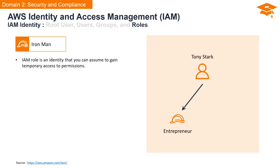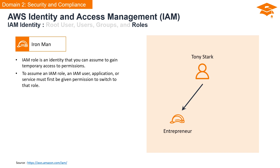An IAM role is an identity designed for individuals, applications, or services to temporarily gain access to specific permissions within AWS. These roles serve as a bridge for users, applications, or services to access resources they might not have direct permissions for. Using Iron Man as an example, to assume the role of Iron Man, Tony Stark must have credentials to switch to that role. Similarly, to assume an IAM role in AWS, an IAM user, application, or service must first be granted permission to switch to that role, ensuring that access is controlled and follows a defined authorization process.